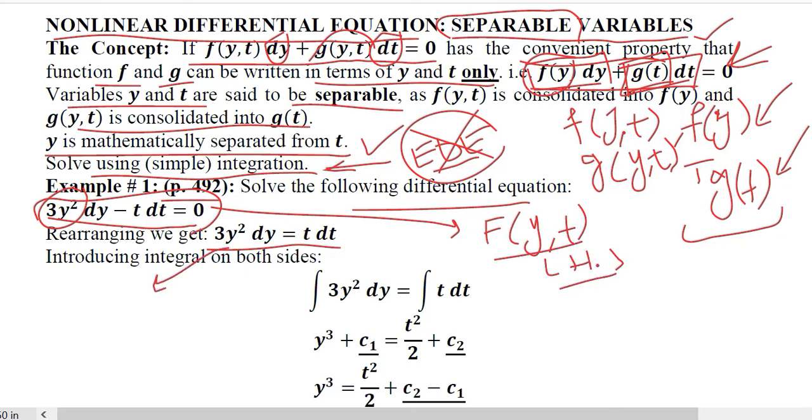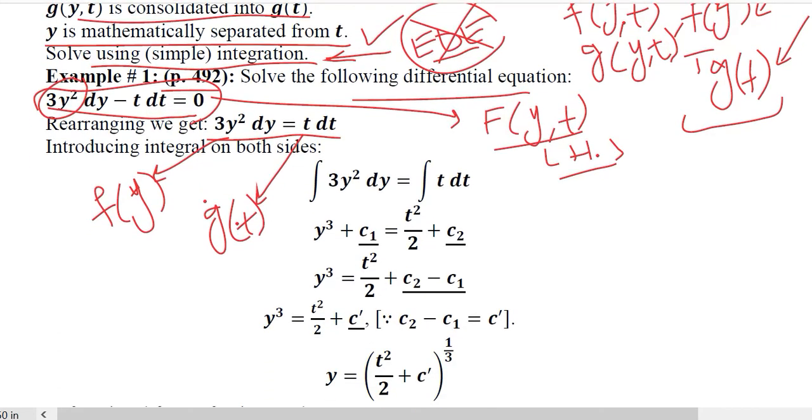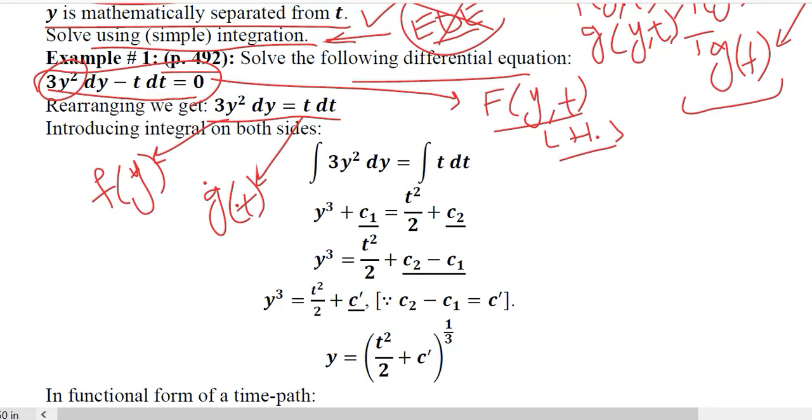Both of them were appearing on the left-hand side. Whereas after rearranging, 3y² dy = t dt, you can see that one of the variables is on the left-hand side and the other variable is on the right-hand side.